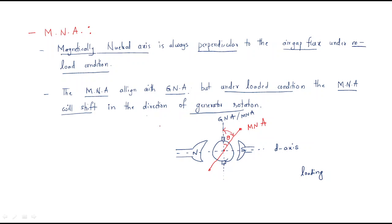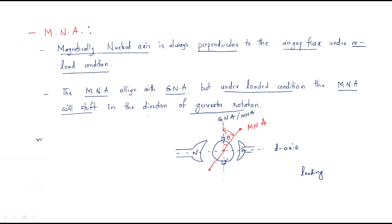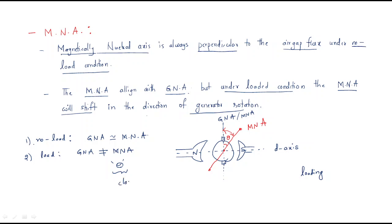At no-load condition, GNA and MNA are both in the same position. But at load condition, GNA and MNA are not the same — MNA will shift with some theta angle in the direction of generator rotation, which is clockwise rotation. The generator always rotates clockwise, while the motor is always in the anti-clockwise direction.